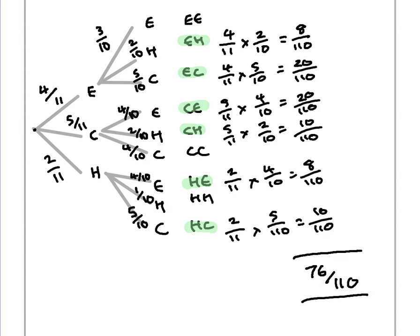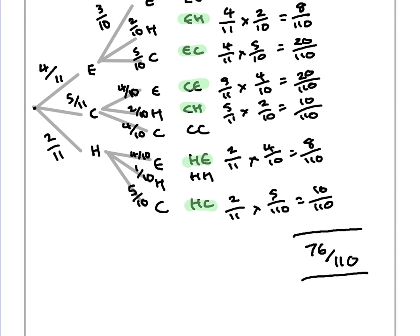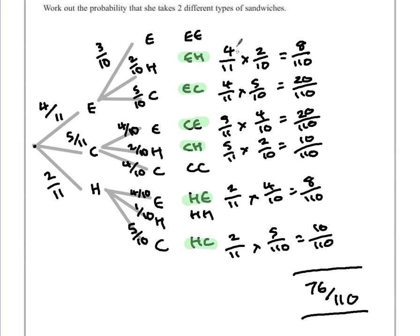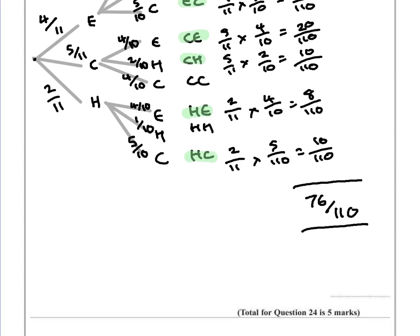We could have also worked this out much quicker if we'd looked at the three values that are the same — egg and egg, cheese and cheese, and ham and ham — and then took those away from the whole number 1. It should still give us the exact same answer.